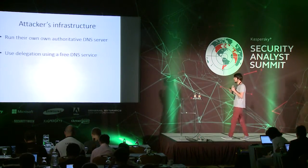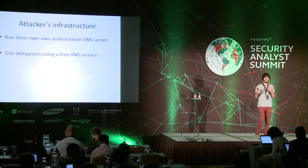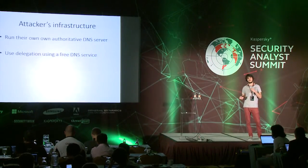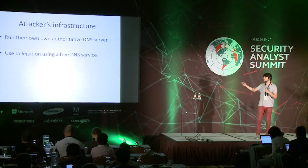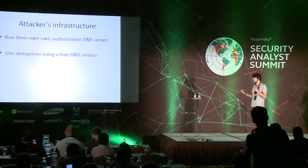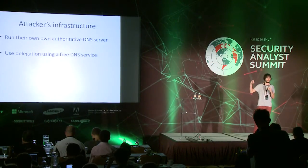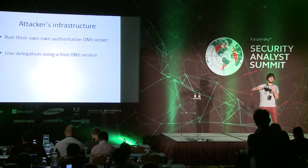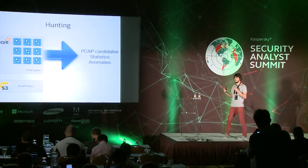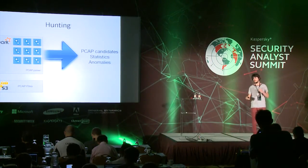How do attackers set this up? They have three ways. The first, and the easiest, is configuring the victim client to use a specific DNS server they control on the internet. The second is running their own authoritative DNS server. The third is using delegation, where a third-party DNS server delegates that domain name for them. So how did we find malware samples using DNS to communicate with attackers?